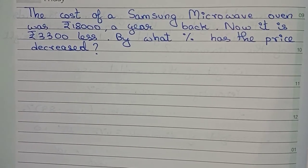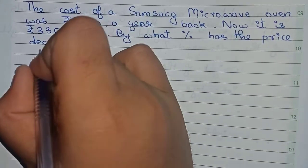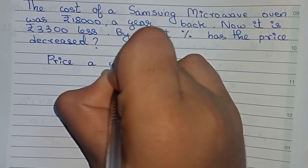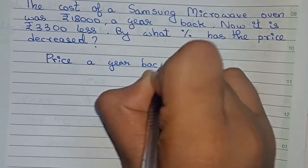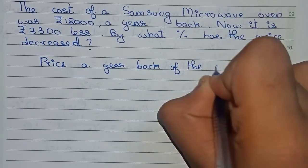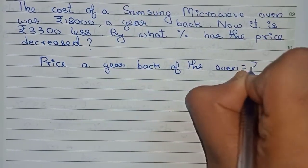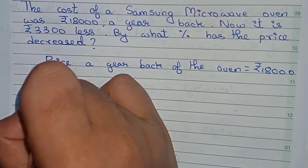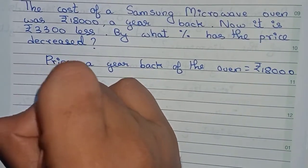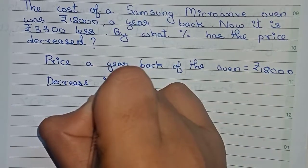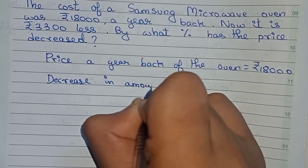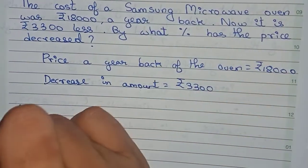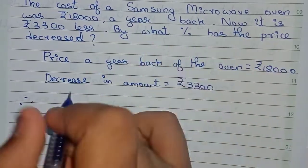So now let's solve this. First, we write: price a year back equals rupees 18,000. Now write that decrease in amount equals rupees 3,300.